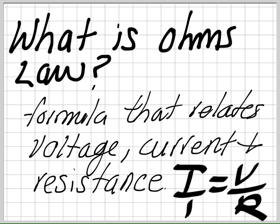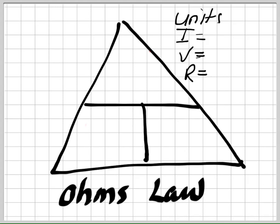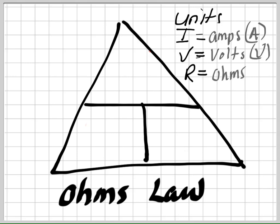Let's go over this triangle. The I stands for current and will always be expressed in amps, or capital A. The V is voltage and will always be in volts, capital V. The R is resistance, and the units are ohms, or the omega sign — kind of looks like an upside-down horseshoe. Current is the only one that starts with an I, which makes it a bit unusual.